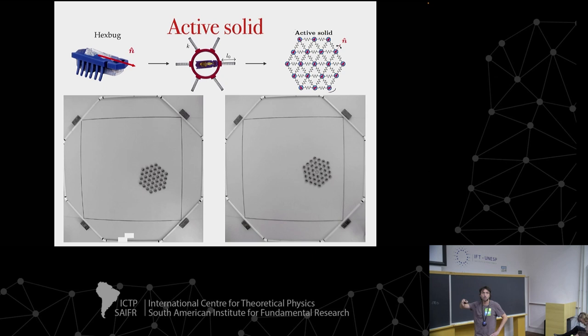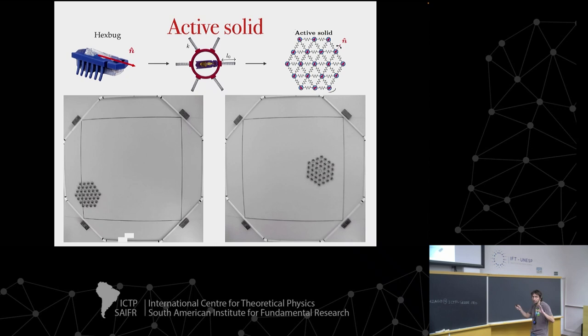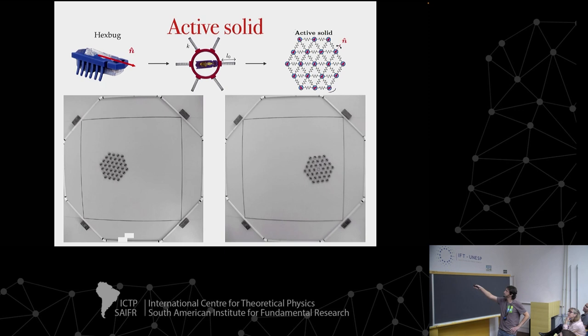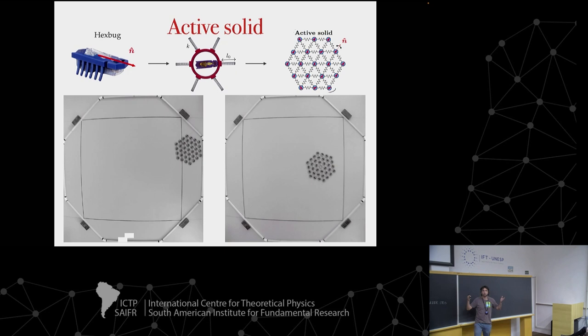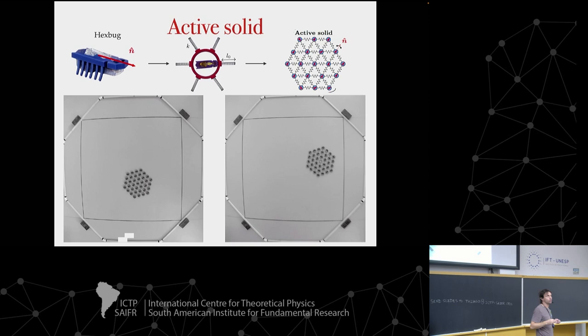If we change things a bit and pin the system at the very beginning but then release, these start to rotate and remain rotating. This tells us that we have a metastable state that can be picked depending on the condition, the noise, and other things.